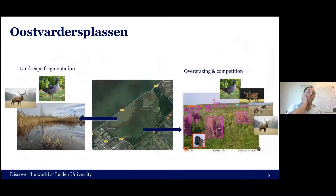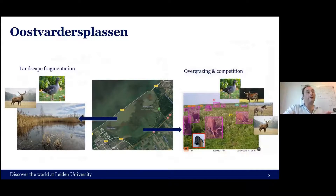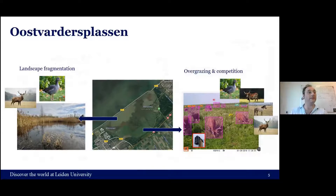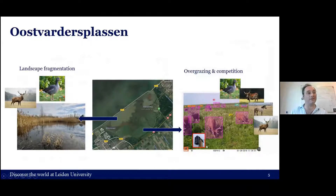I've set up an experiment looking at landscape fragmentation both in the water part and in the grass area. In the grass area we established a bunch of cameras monitoring animal activity, an experiment that was ongoing until the deer actually destroyed all the camera positions — but we did collect some data and that's something we are working on.